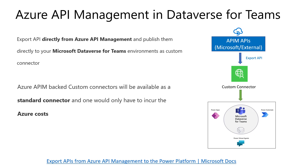If you can publish and manage those APIs that you are using in Power Apps or Power Automate to Azure APIM, you can actually export those APIs to the Dataverse for Teams environment as a custom connector, and those custom connectors are going to be available for Power Apps and Power Automate as a standard connector — yes, as a standard connector. So think about that: you can have all of the API functionality available without paying a premium fee.